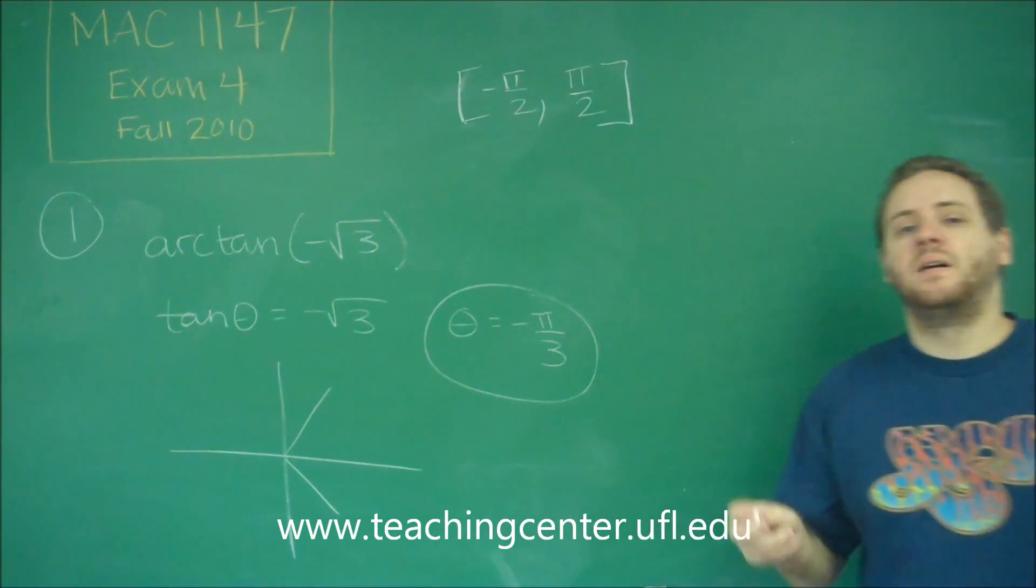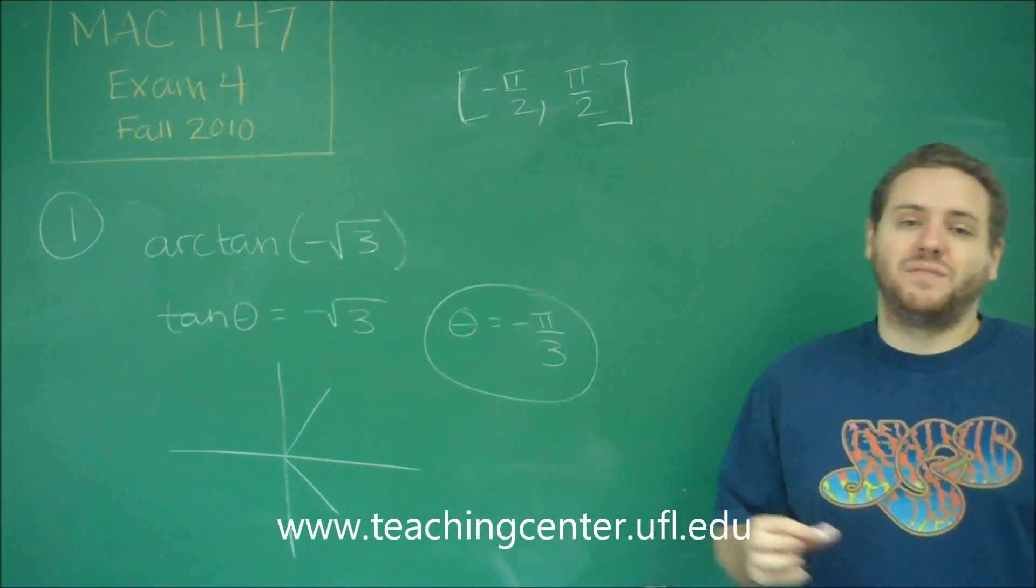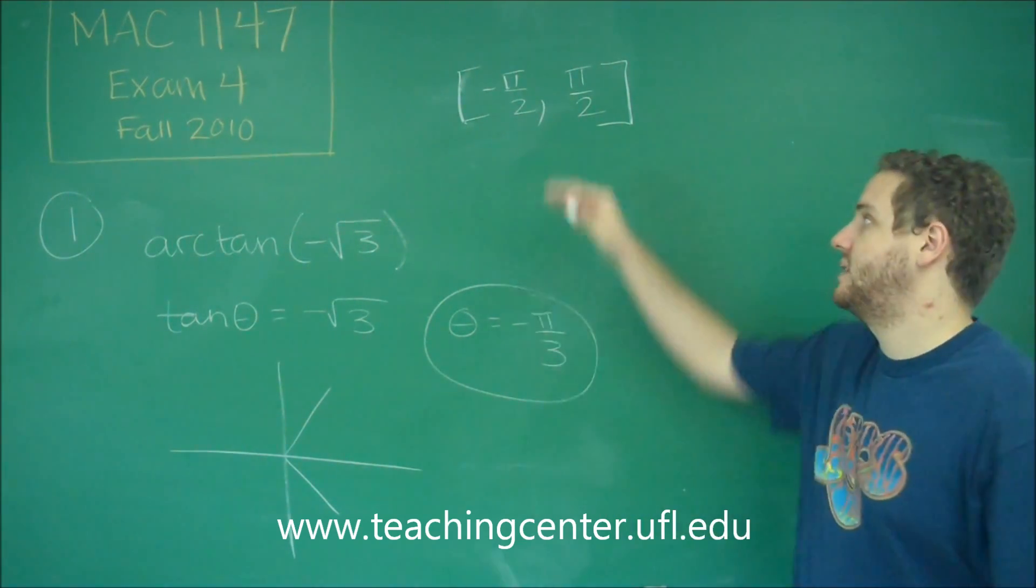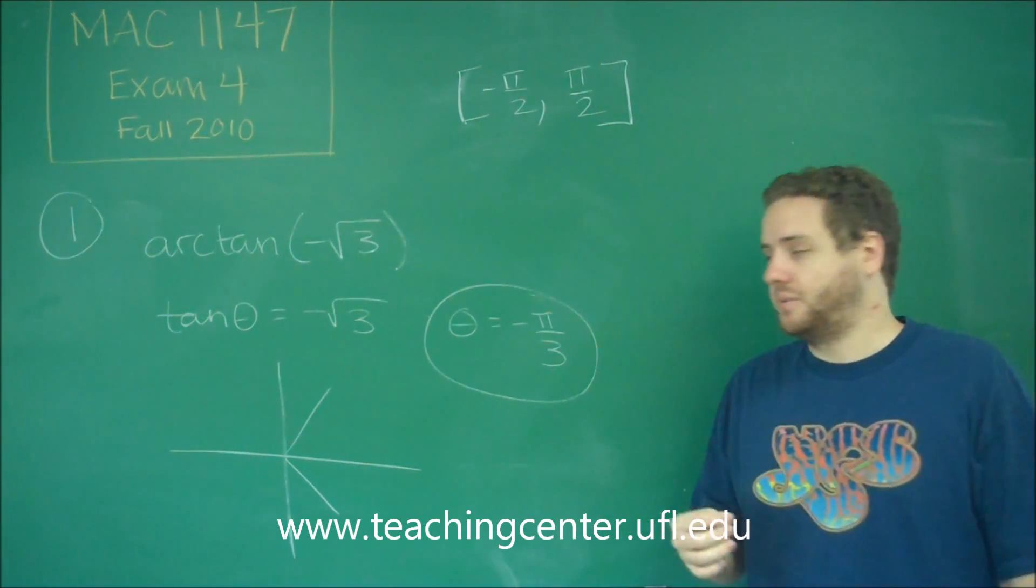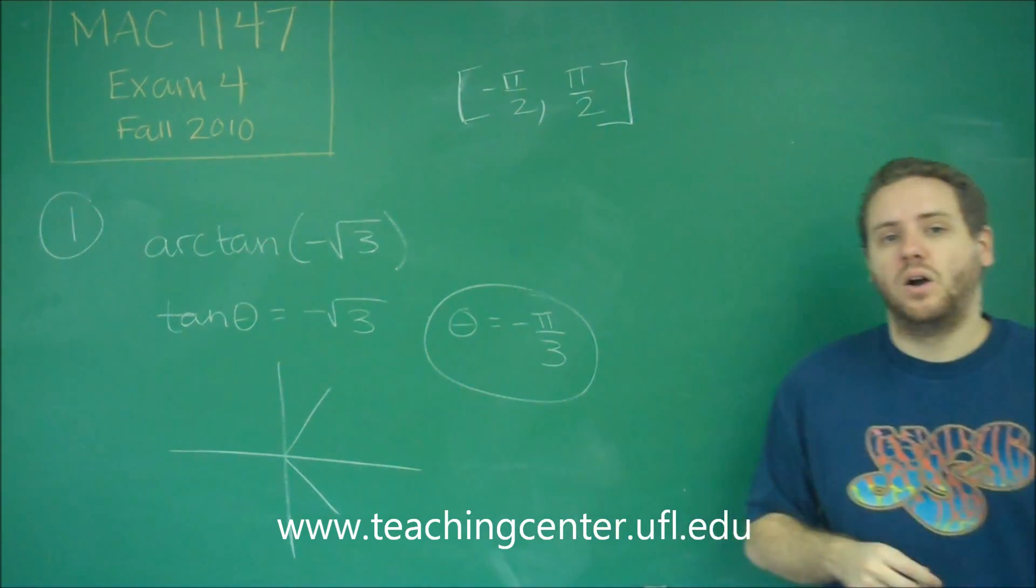Because if you think about it, if you wanted to write the first and fourth quadrants, but you had to start at zero, you'd have to break it up zero to pi over two and three pi over two to two pi. This allows you to write it just as one interval. So in this case, we knew it had to be fourth quadrant, so it's just the negative of our reference angle.